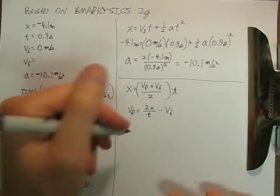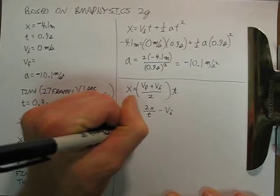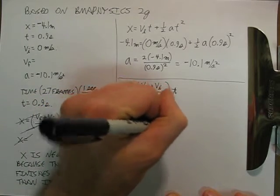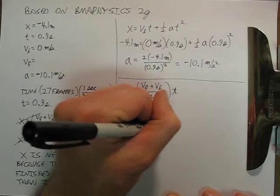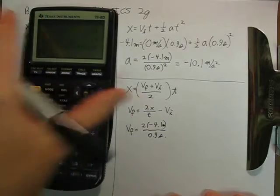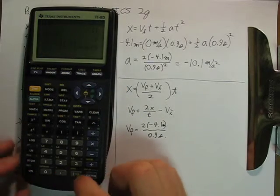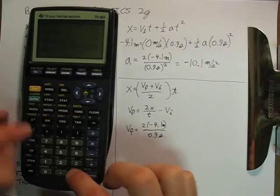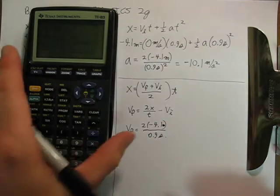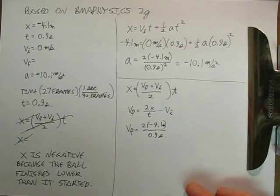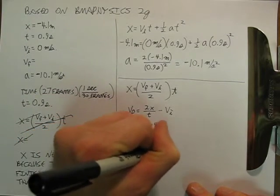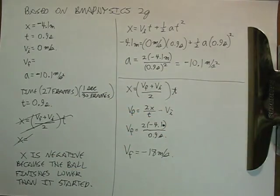And VI is zero, and I'm almost out of time. So, I'm going to see my VF is 2 times negative 4.1 meters divided by 0.9 seconds. I'm going to say my final velocity was 2 times negative 4.1 divided by 0.9. Final velocity was negative 18 meters per second. And I'm out of time for this video. Thank you.